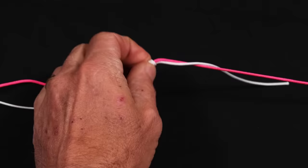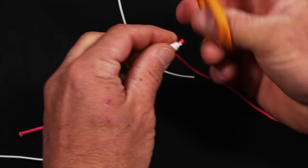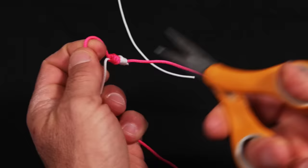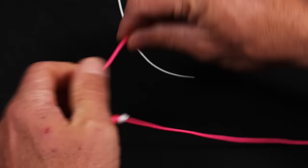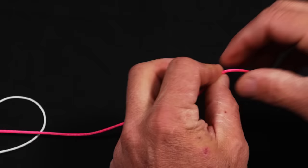So double Uni, we're going to simply trim off the tag ends. And you have an extremely strong knot. That could be from your leader to your braid. This would be your leader and your hook to your braided line. And then you could tie another one to your monofilament.